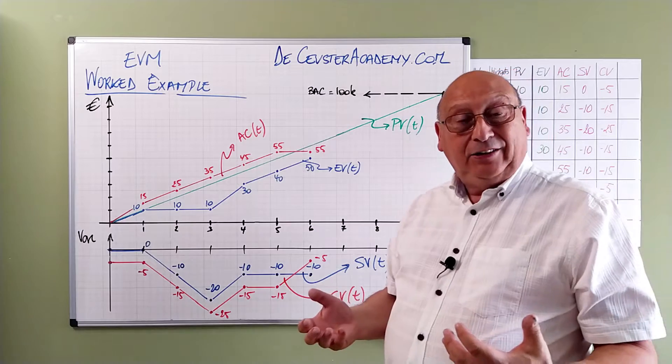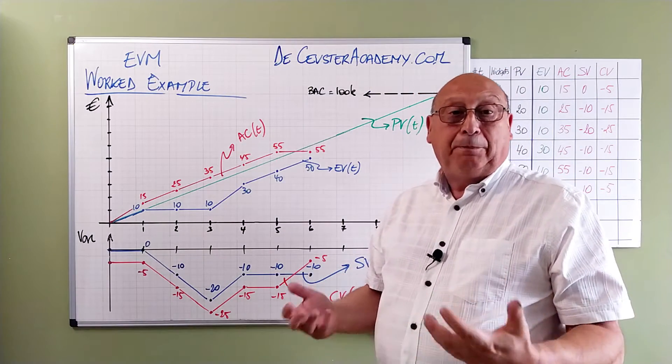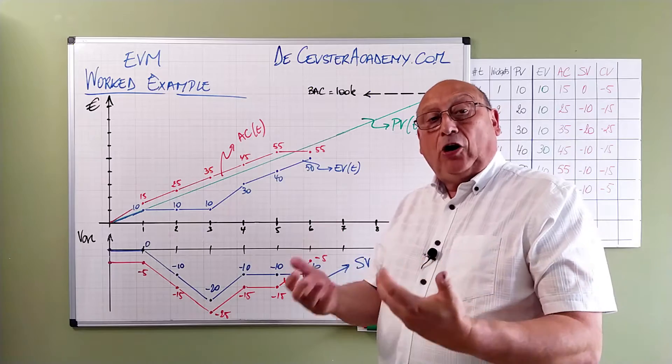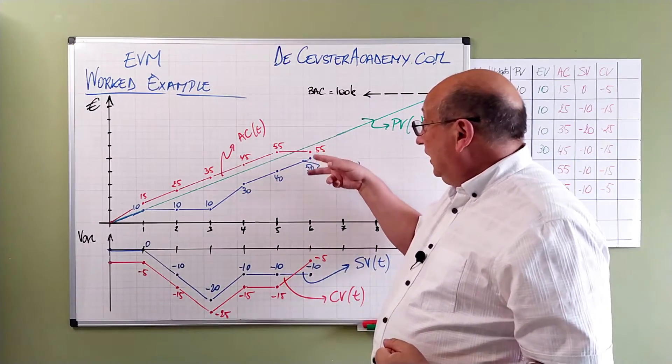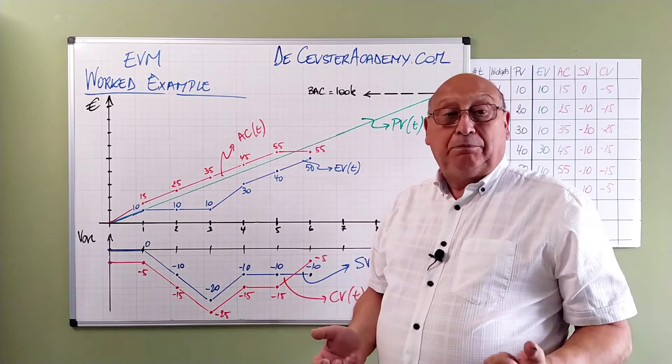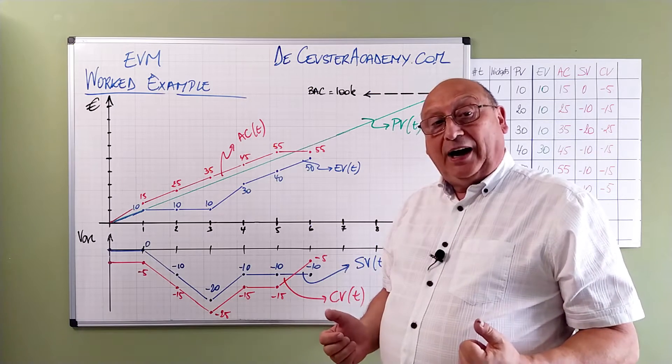And from here we are producing again one widget per period. So we are in fact back up to speed but we are still one widget behind. So we are a little bit behind schedule.